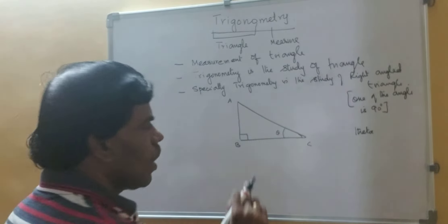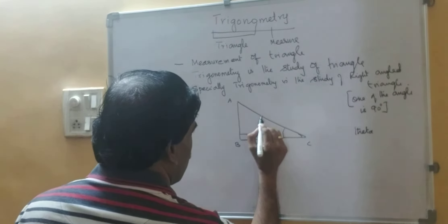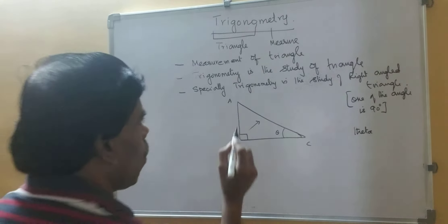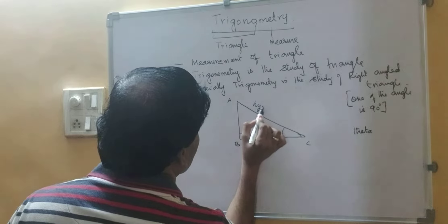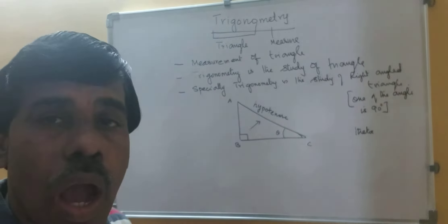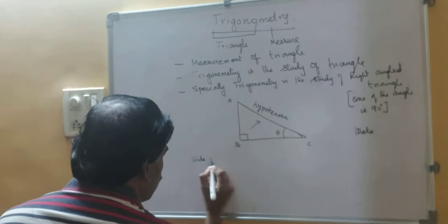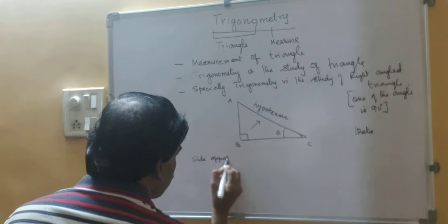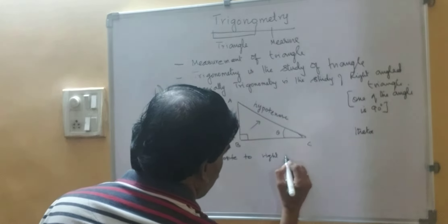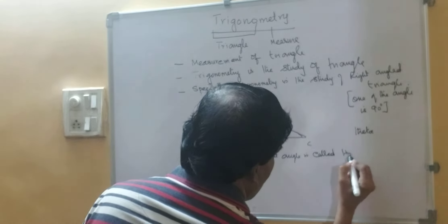Now, very carefully you have to see. What is this side? It is opposite to 90 degrees, so it is called the hypotenuse. The side opposite to the right angle is called the hypotenuse.